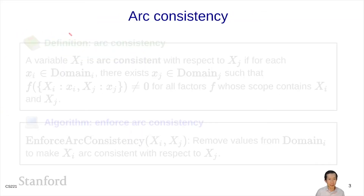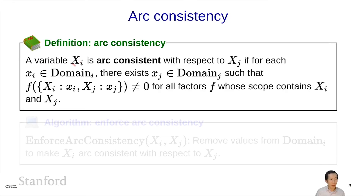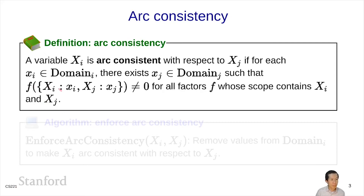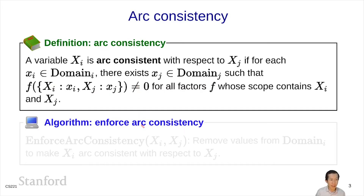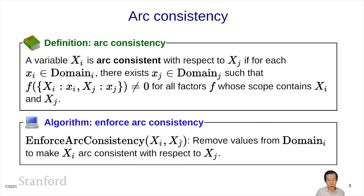More formally, R-consistency is a property. A variable xi is R-consistent with respect to another variable xj if for each value in the domain of xi, there exists some other value in the domain of xj such that all the factors check out. Formally, if you look at all the factors whose scope contains xi and xj and evaluate that factor on xi and xj, you get something that's not zero. Enforcing R-consistency is a procedure that removes values from domain i to make xi R-consistent with respect to xj, exactly what we did in the previous example.